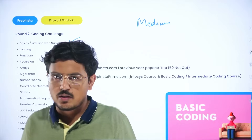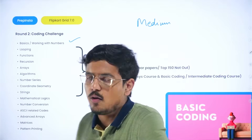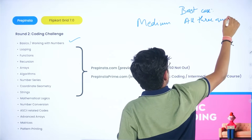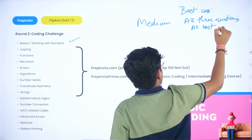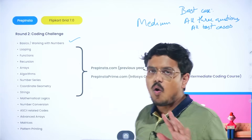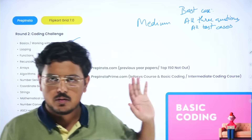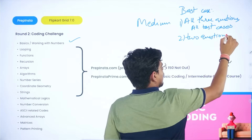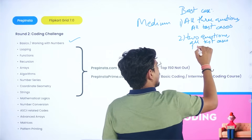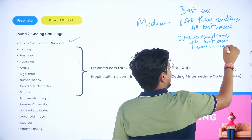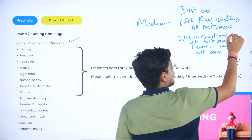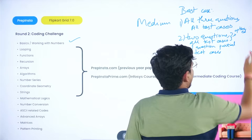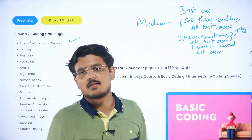If you want to go ahead in the coding challenge, you should ideally solve all three questions. Best case: all three questions, all test cases — 100% you're going forward. Second scenario: two questions with all test cases, and one question with partial test cases, but those two solutions are optimized — you still have chances of qualification. Other than these two scenarios, there is no chance of qualification.